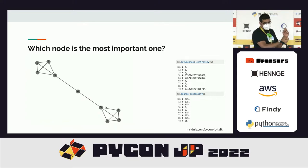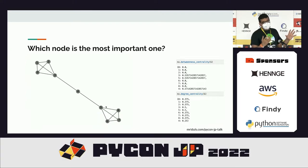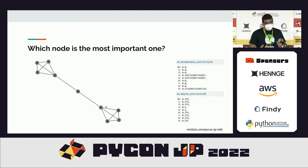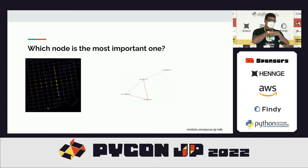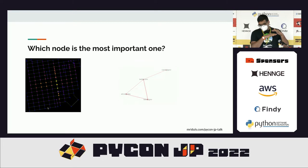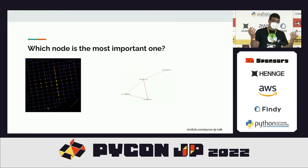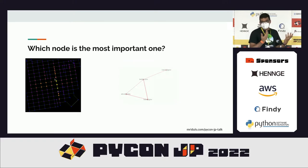There's no one right way — context is very important. You first need to formulate the right question. For example, this is a street network extracted from OpenStreetMap. If you want to find where to open your next cafe, you want a street visited by a lot of people. You can build a heat map finding the most important streets that people have to pass through just by the nature of how the streets are designed.